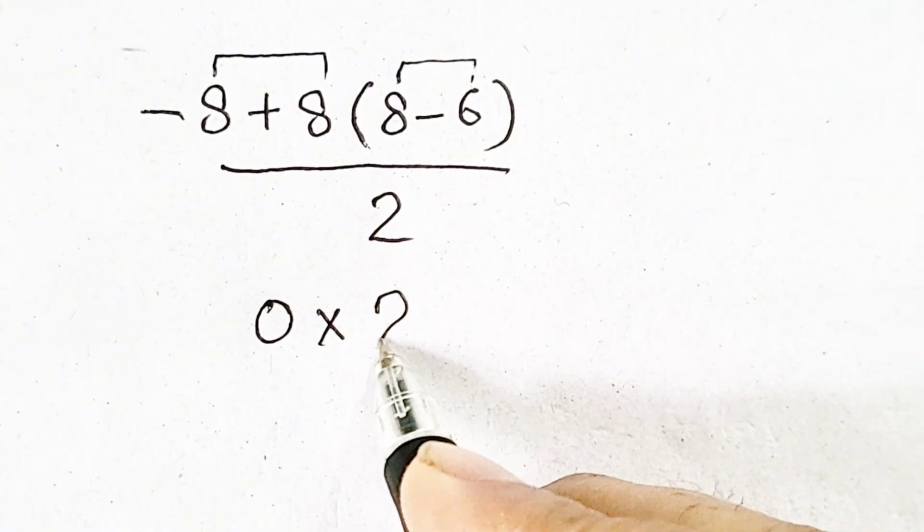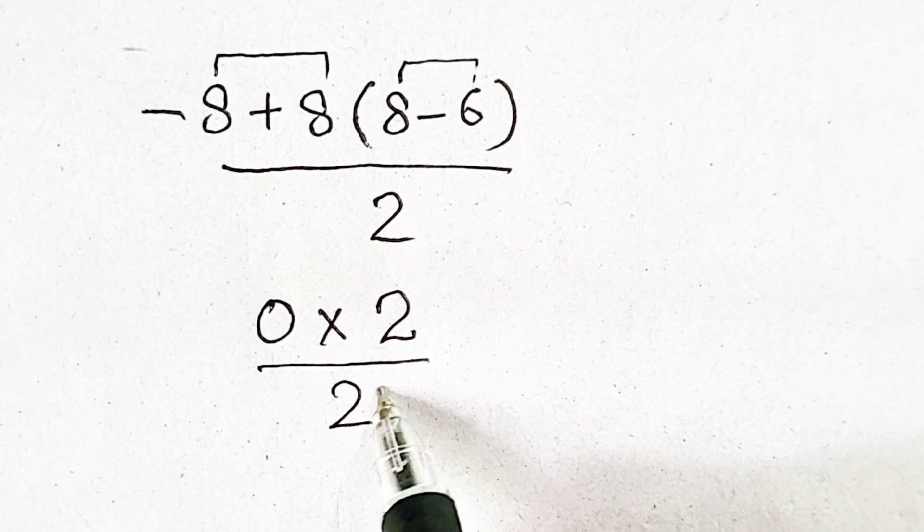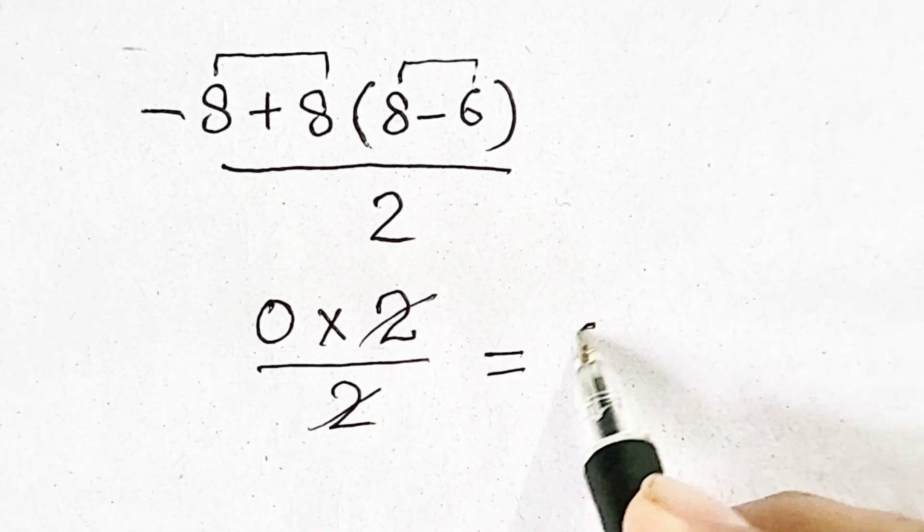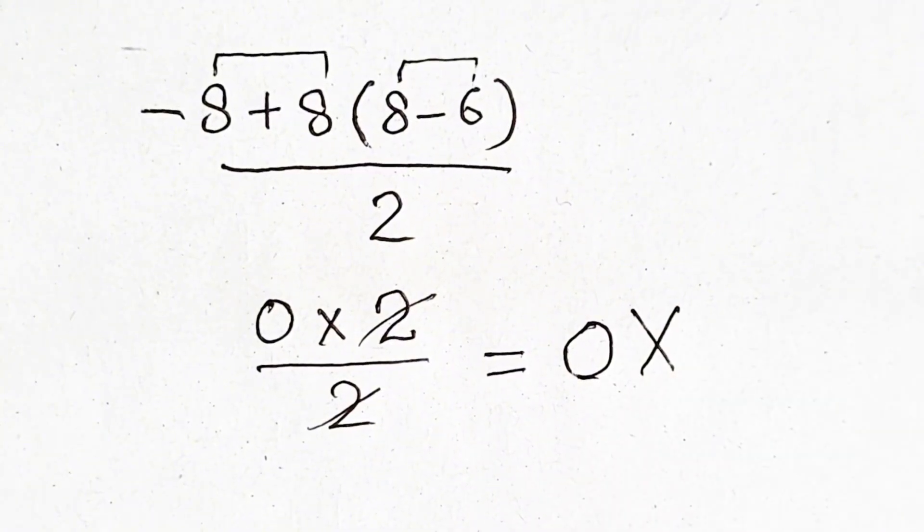So it is equal to 2 divided by 2. So 2 is cancelled with 2 and the answer will be equal to 0, but it is wrong.